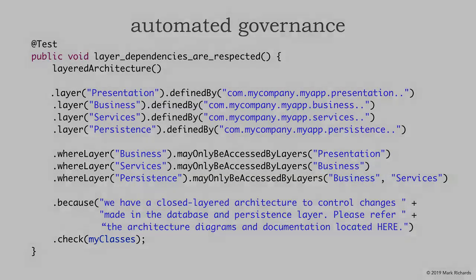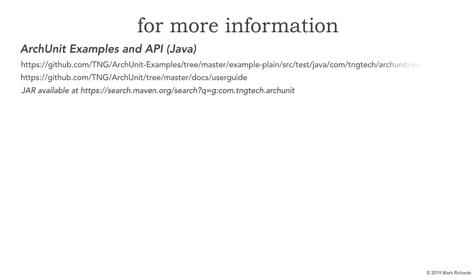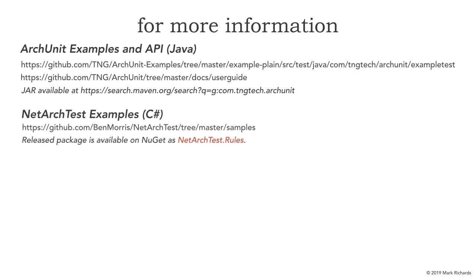There are many API examples in both ArcUnit and NetArcTest. For ArcUnit, here are three links: the examples, the example tests directly, and the user guide which has the full API. My recommendation: go through the examples rather than the full API, as it's pretty exhaustive, so you can see the kinds of things you can automate for compliance. For C# with NetArcTest, Ben Morris has done the same. Go to GitHub, NetArcTest, tree/master/samples to see all sorts of examples — the best way to learn the API. The ArcUnit jar is available on Maven and you can do a NuGet on NetArcTest.rules in C#.